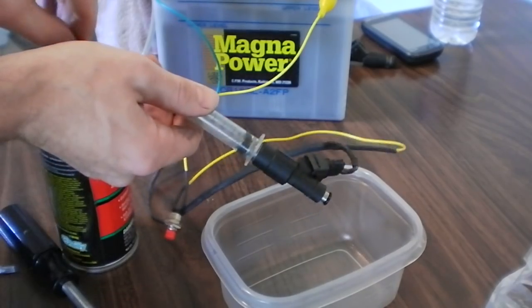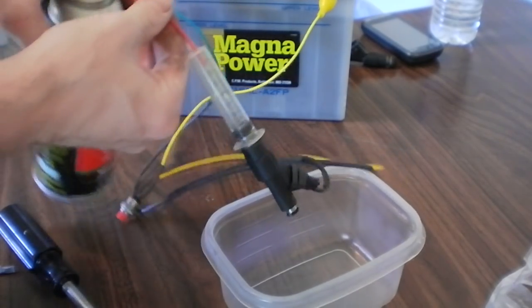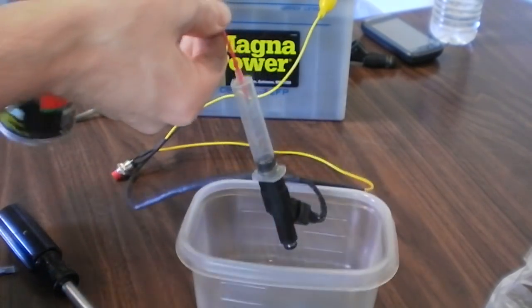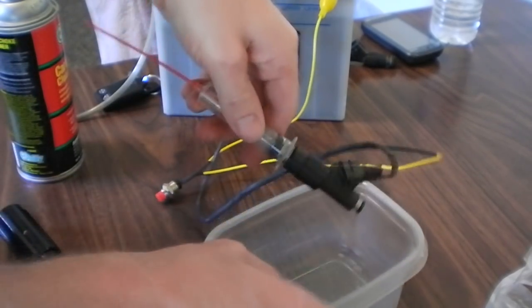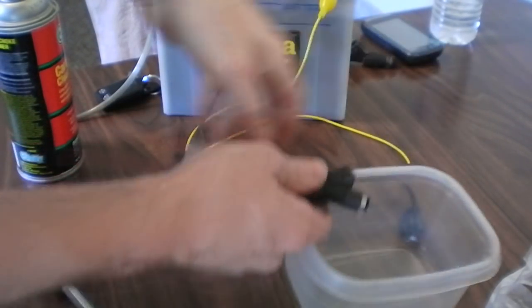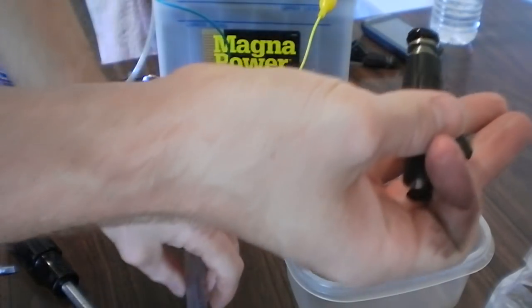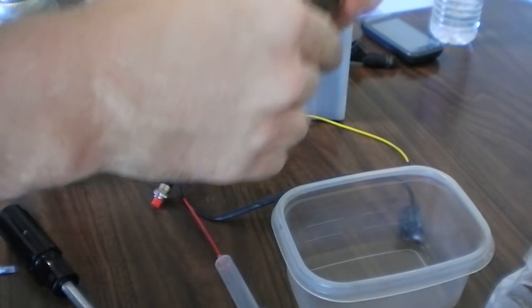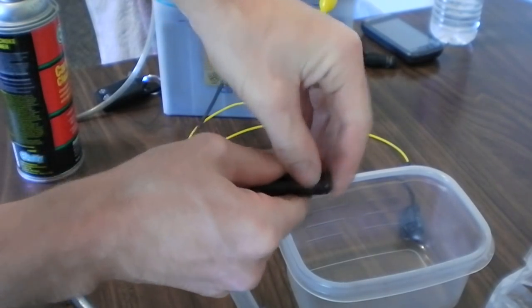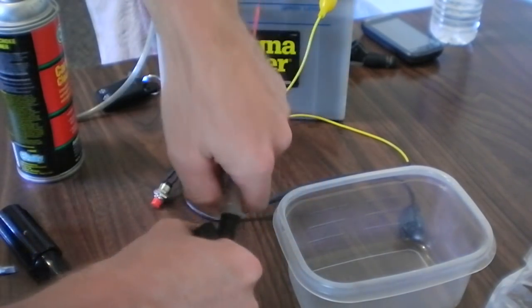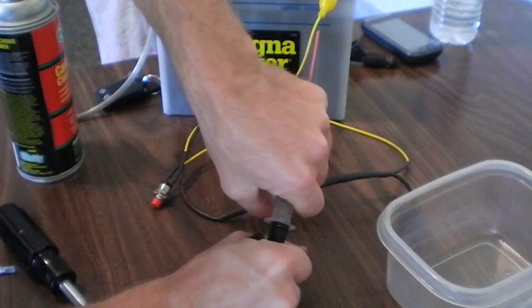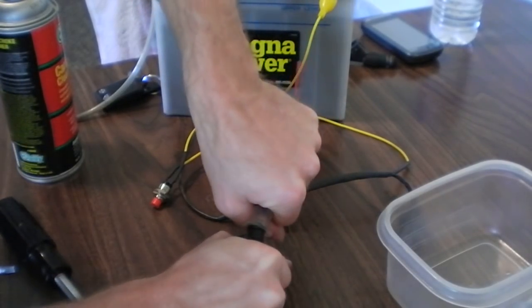Now I'll go ahead and do the other side, which I've already done but I might as well show you. Take everything off, disconnect everything. Put the o-ring on the right side.